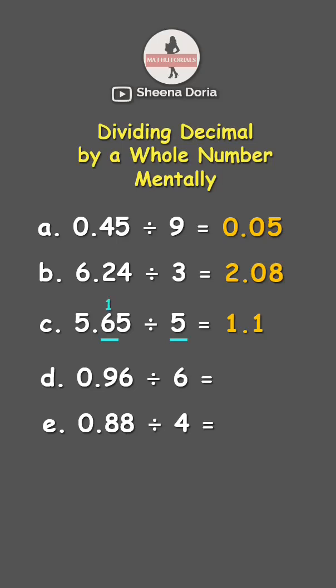Next, we're going to get the remainder 1 and the next digit 5. Place them together, that's 15. 15 divided by 5 is 3. Our answer is 1.13.